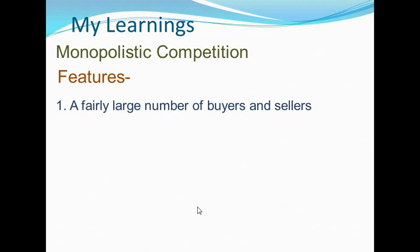A fairly large number of buyers and sellers: the number of buyers and sellers of a commodity is fairly large in this form of market structure. However, the number is not as large as in the case of perfect competition. Since there are a large number of buyers and sellers, any individual buyer or seller cannot influence the market price of the commodity.